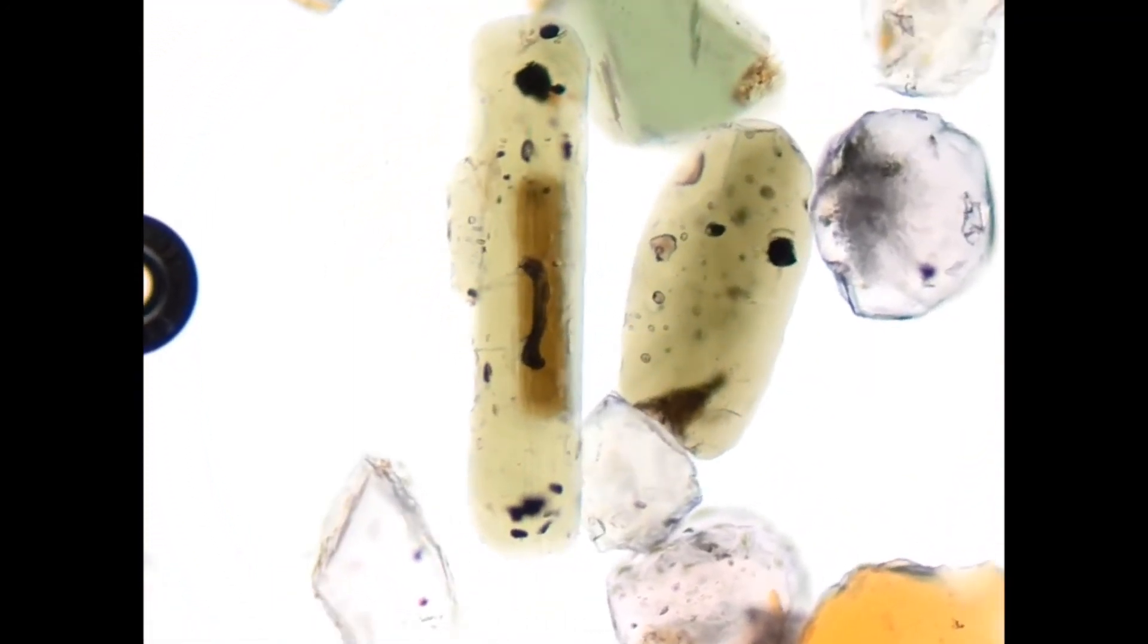If we look at the minerals under cross-polarized light, we see second to third order interference colors, although they are obscured a bit by the strong own color of the minerals.